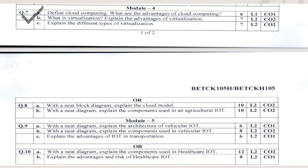The all-choice for Module 4: with a neat block diagram, explain the cloud model — you will draw the complete block diagram and explain each model in detail, which is 10 marks. With a neat diagram, explain the components used in an agriculture IoT — it is a kind of case study where you list the components used and explain why agriculture IoT is required. With a neat diagram and explanation, it is 10 marks.